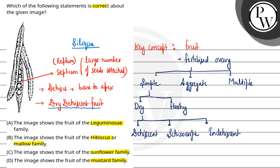So now in the question, we had to identify this diagram and tell which family it belongs to. So this is a fruit called siliqua, and it is found in mustard family. First option says the image shows fruit of leguminosae family, so this is incorrect. In leguminosae, we find legume fruit, which is a dry dehiscent fruit.